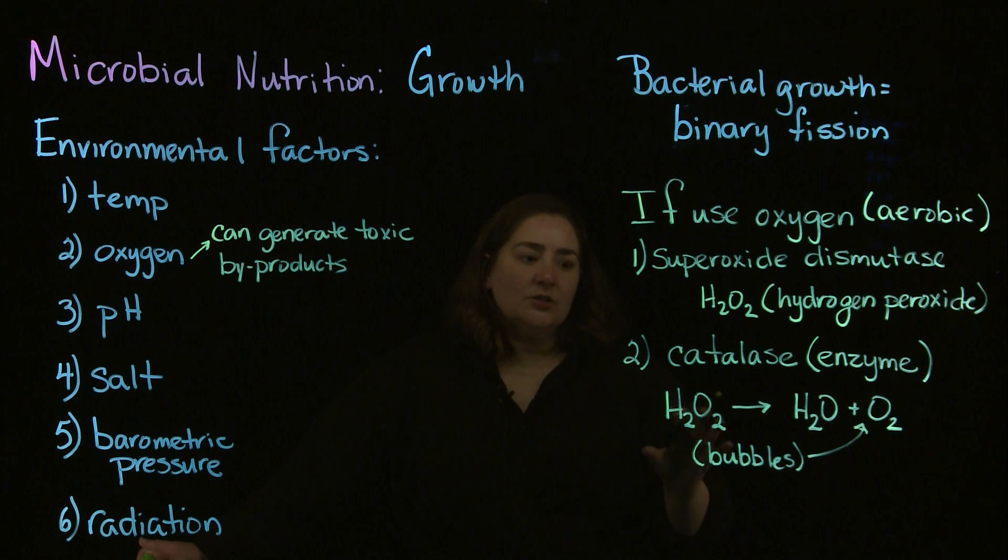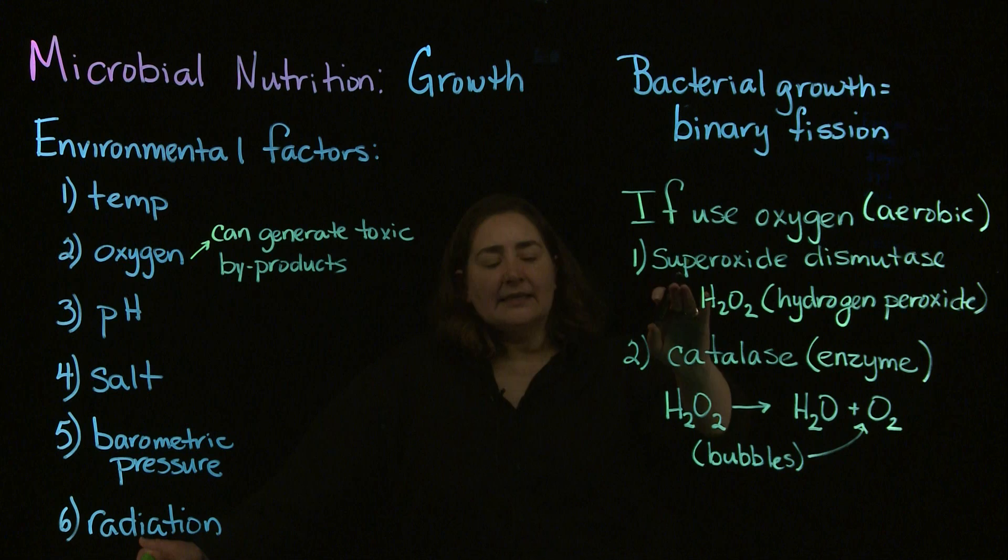In processing oxygen within the cell, superoxide dismutase creates hydrogen peroxide, which then has to be broken down by catalase. If a bacteria is aerobic, it has to have those particular molecules, especially catalase.